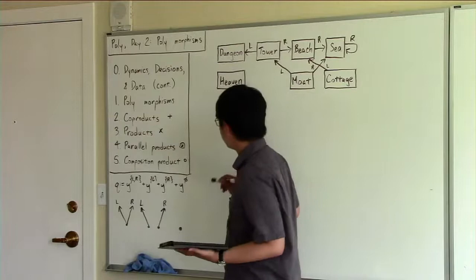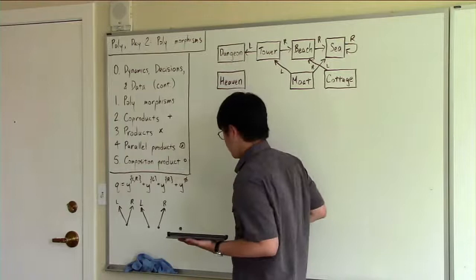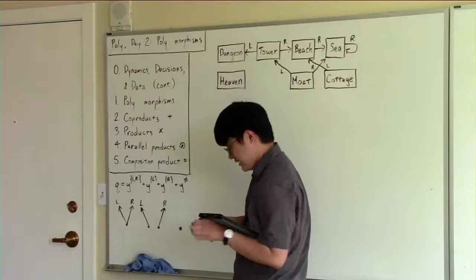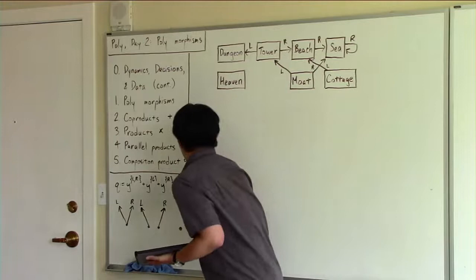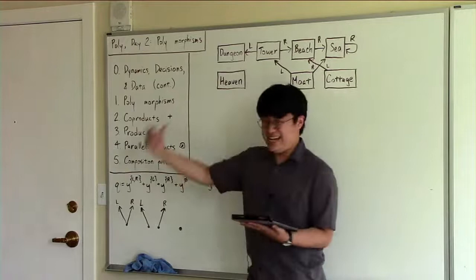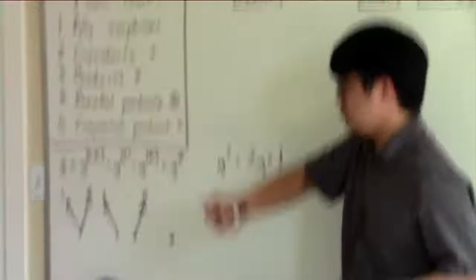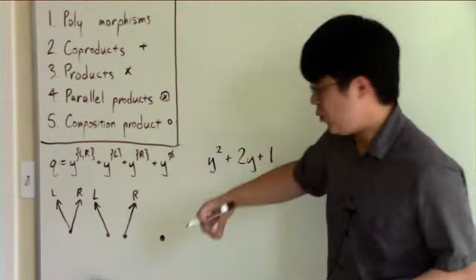Last time, we introduced our objects of study, these polynomial functors, and we wrote them out as these sums of representable functors. Here we have an example of a polynomial functor. Last time we were writing this as something like y² + 2y + 1, but really we want to think of those numbers as sets. I've actually named the elements of the set - I've rewritten y² as y to this two-element set, these two as two one-element sets, and one as y to the power of the empty set.